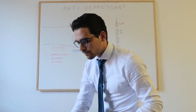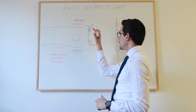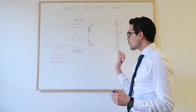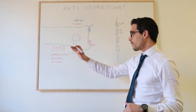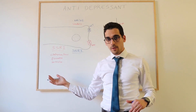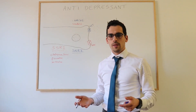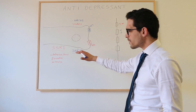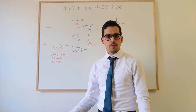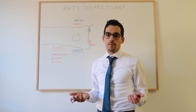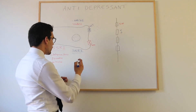If SNRIs have complementary benefits, why aren't they given first? It's because of side effects. SNRIs have all the same side effects as SSRIs, but they also exhibit effects related to noradrenaline, such as increased heart rate and increased blood pressure. The main additional side effect is hypertension — patients can develop high blood pressure — which is why SNRIs are not the first choice.